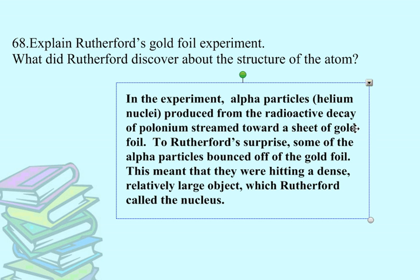alpha particles produced from the radioactive decay of polonium streamed towards a sheet of gold foil. To Rutherford's surprise, some of the alpha particles bounced off the gold foil. He expected them just to go straight through.